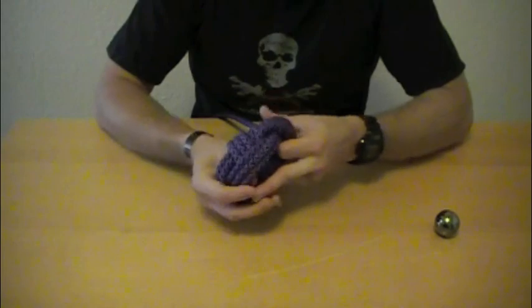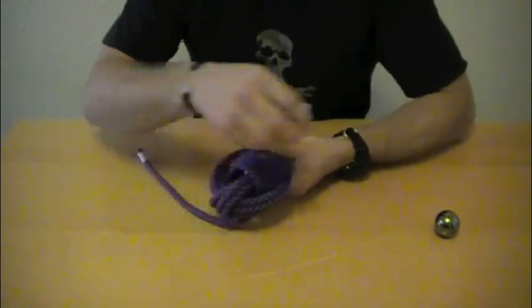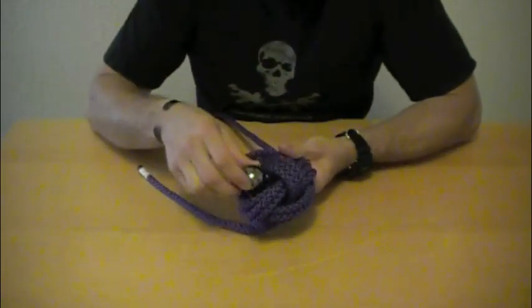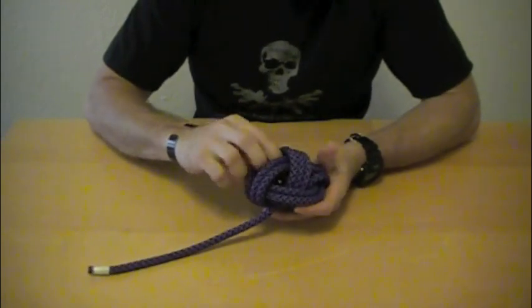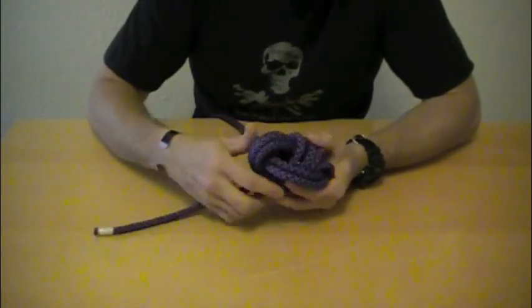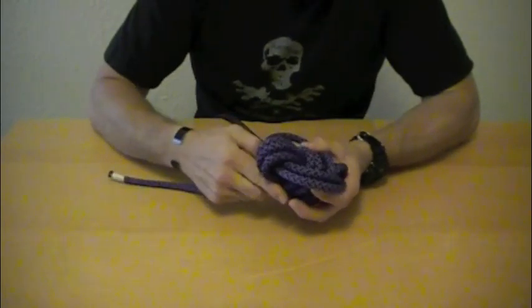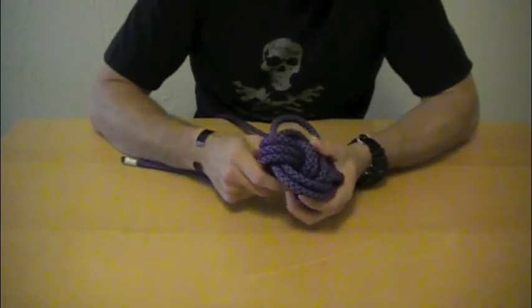I know what you're thinking. This looks like a big jumble of rope. But we'll insert our core into the Monkey's Fist. The next step after this is just to tighten everything. You'll just start here and work your way through.